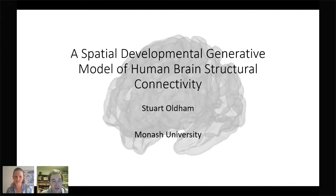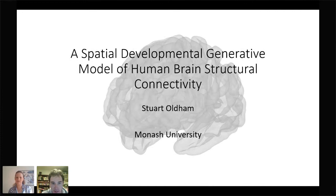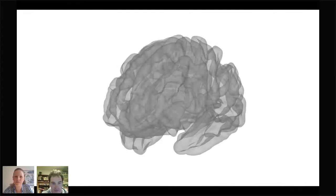Thank you everyone for coming. Today I'm going to be presenting some of my PhD work, which looks at developing generative models of human brain structural connectivity. The human brain is very complex — it has some hundred billion neurons and hundred trillion synapses — and the way in which these are all connected allows us to have our cognition, behavior, and consciousness. How they are connected and how they come to be connected is something really important to understand.